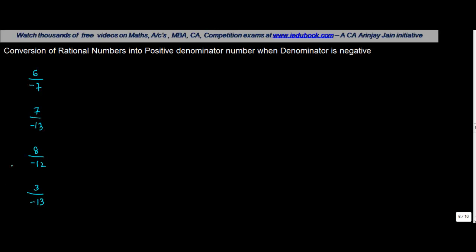Now in such a case you will have the numerator which is positive, but the denominator which is there in all these cases is negative. So conversion of rational numbers into positive denominator number when the denominator is negative.